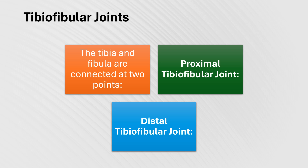The tibia and fibula are connected at two points. The proximal tibiofibular joint, located near the knee, is where the head of the fibula articulates with the tibia. Although it allows minimal movement, it maintains stability of the knee and lower leg. The distal tibiofibular joint, located near the ankle, connects the tibia and fibula and helps stabilize the ankle joint. It is important for transmitting forces between the two bones during movement.